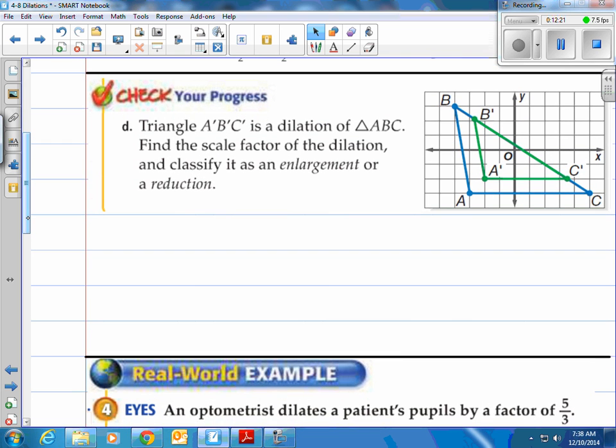Alright, you give it a shot here. This one you can do. You don't have to have graph paper. Try to figure out if it's an enlargement or reduction in what the scale factor is. Come back, check with me in a second. Alright, it says triangle ABC prime is a dilation of triangle ABC. Find the scale factor of the dilation and classify it as an enlargement or a reduction. Alright, right away. I know blue is the original. Green is the image. Blue is the first thing. Green is the second.